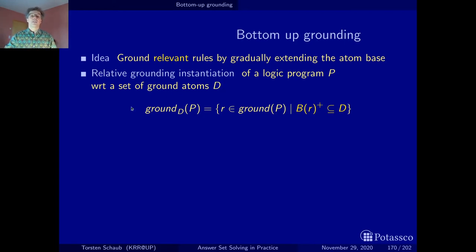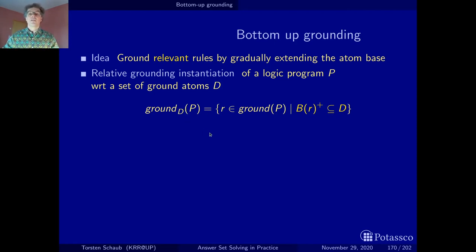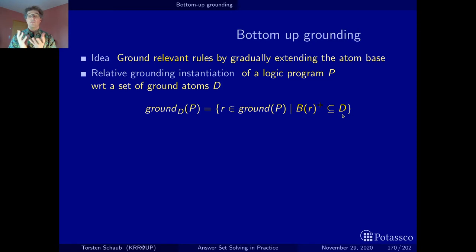This definition tells us: we look at all ground instances of P, but only those relevant with respect to D. Specifically, we look at all ground rules of P such that the positive body literals are among the atom base D. Since we look at ground rules, these are also ground atoms, and it makes sense to check whether they occur among the ground atoms that constitute the context we have so far.